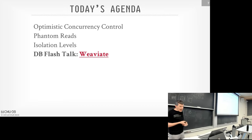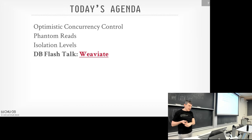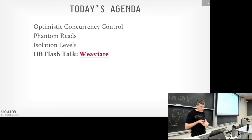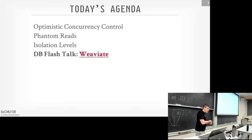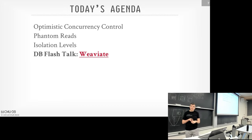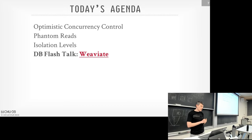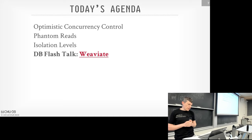Then we'll deal with more anomalies we didn't cover last time called phantoms. Then we'll talk about isolation levels — how to actually relax the requirement for all the stuff we have to do to maintain serializability for transactions. And then we'll finish up the flash talk from the Weaviate guys.